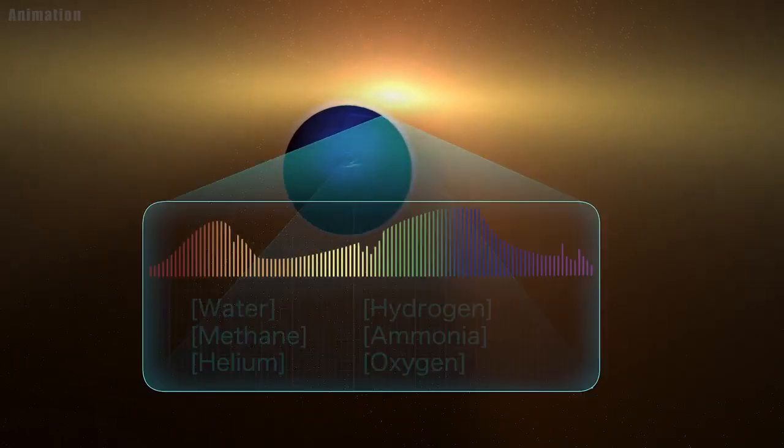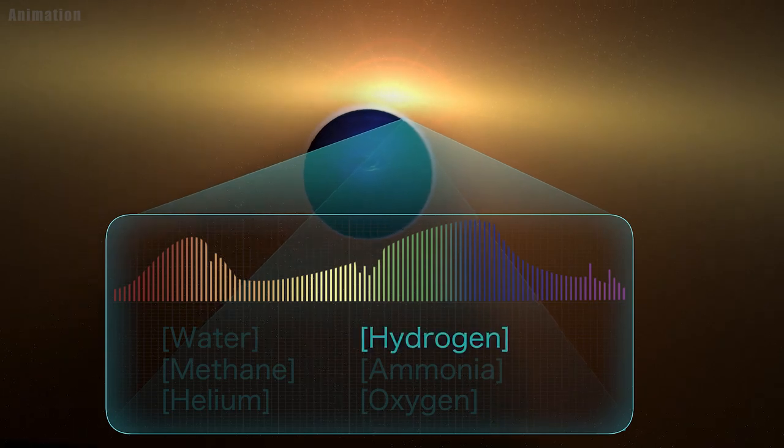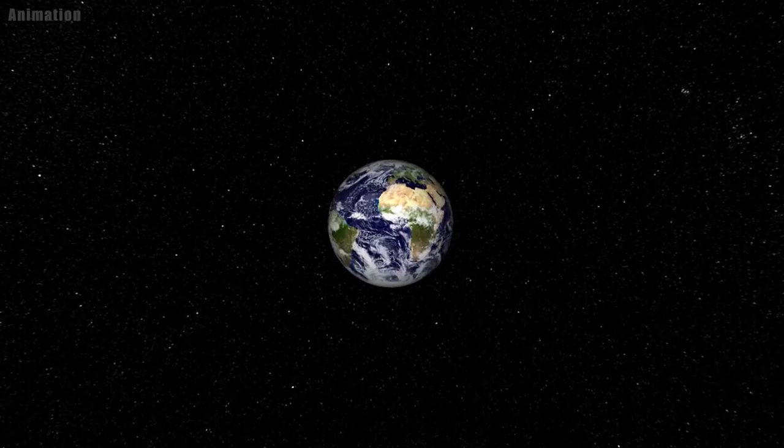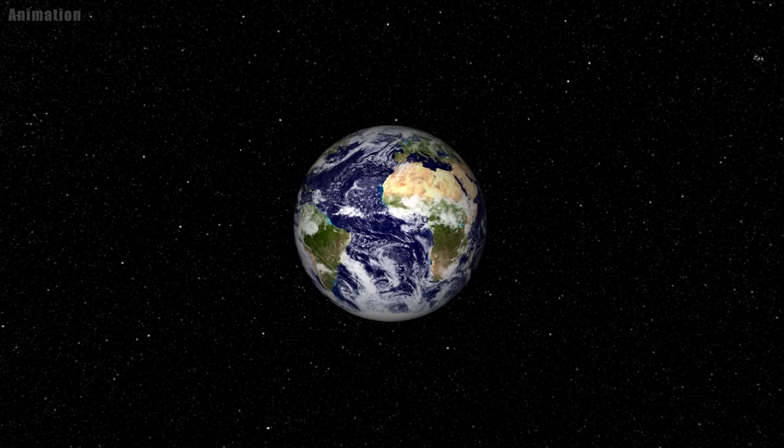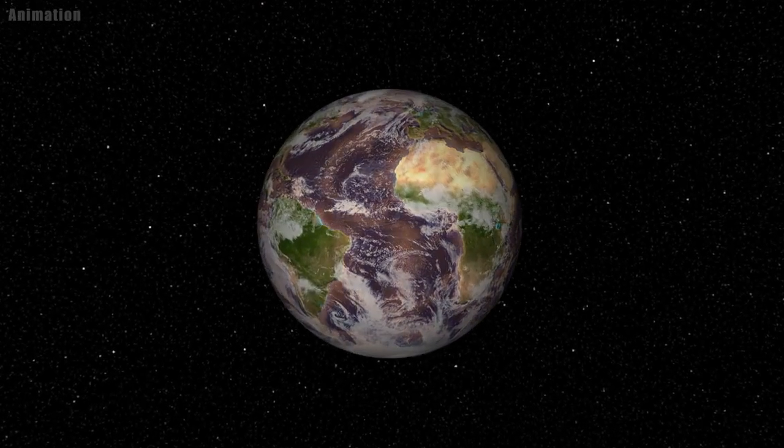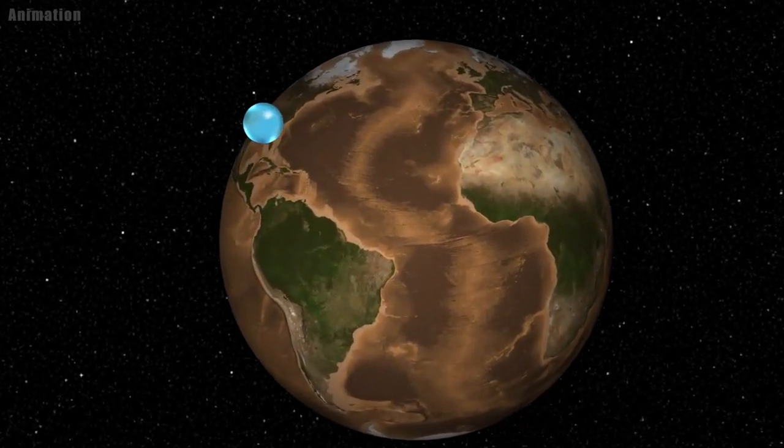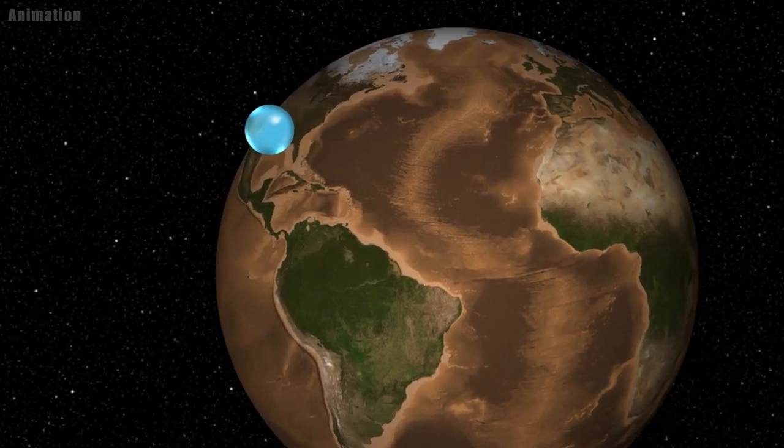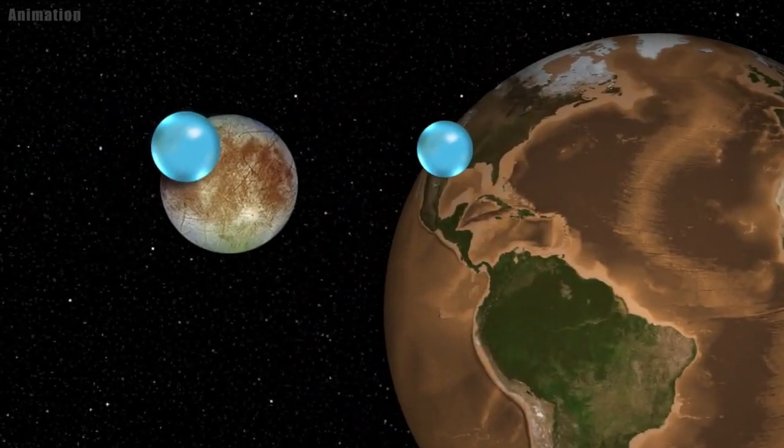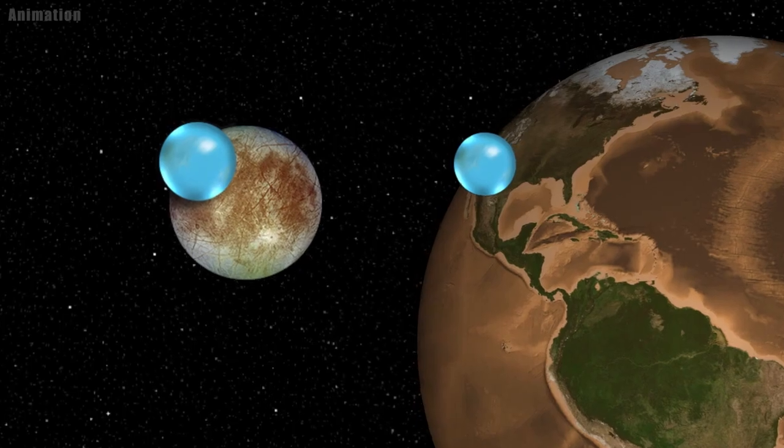Astronomers didn't directly detect water on the Kepler-138 planets. Instead, they compared the planet's sizes and masses to models that concluded up to half of their volume should be made of materials lighter than rock, but heavier than hydrogen or helium. The most common of these materials is water.